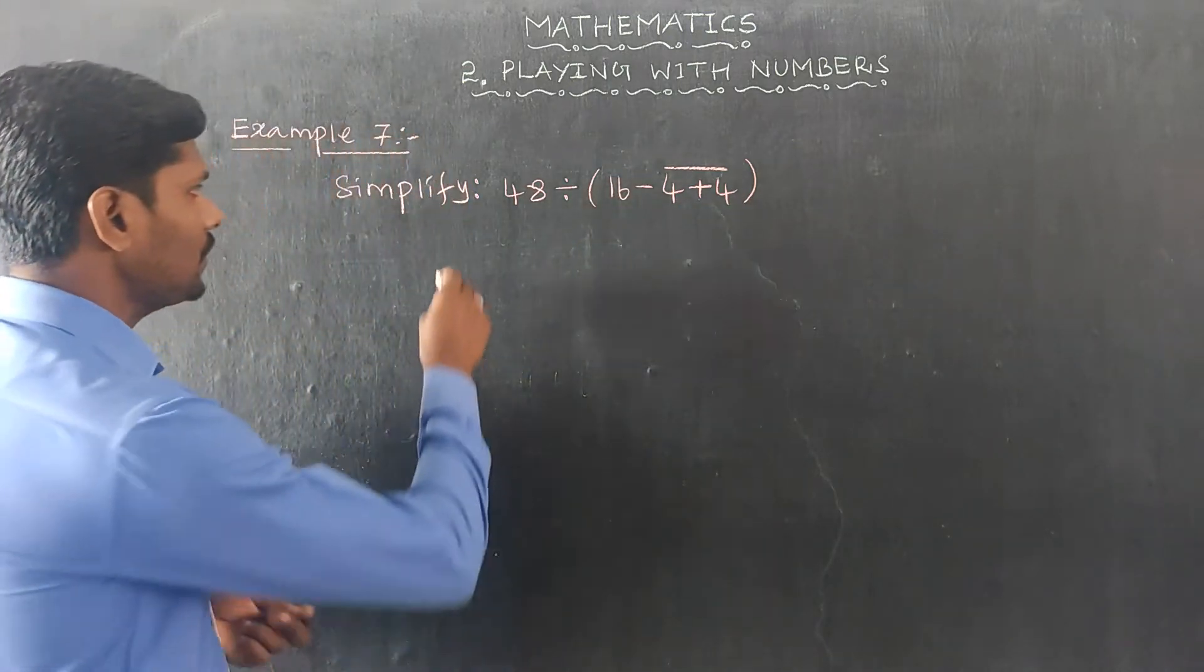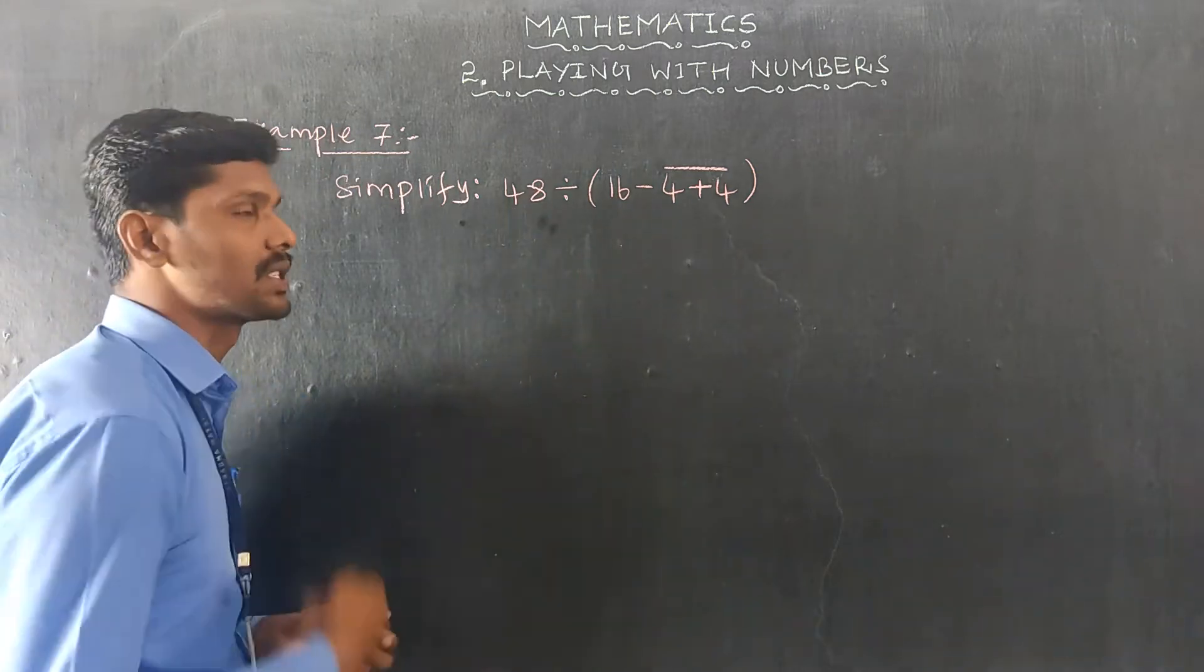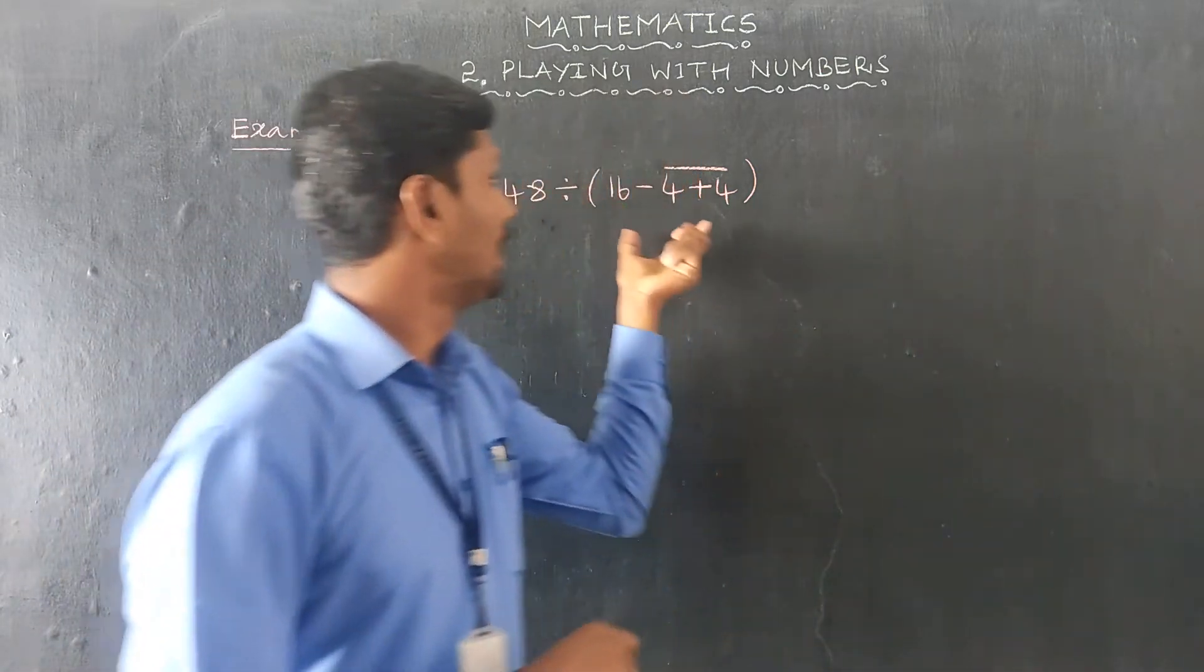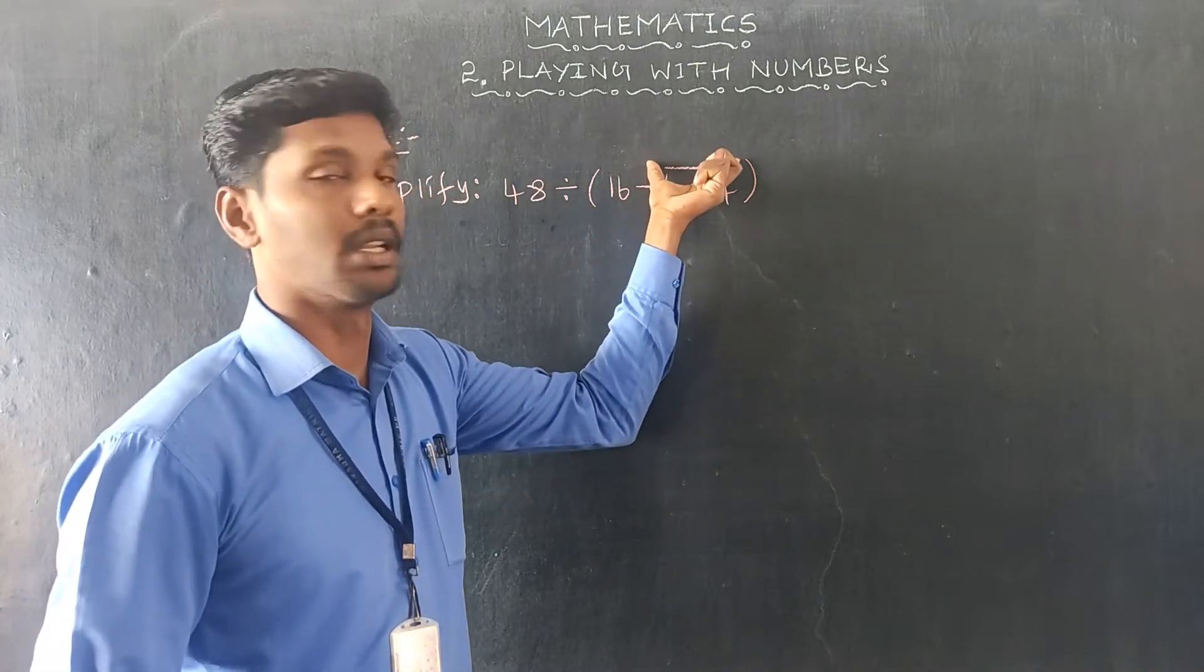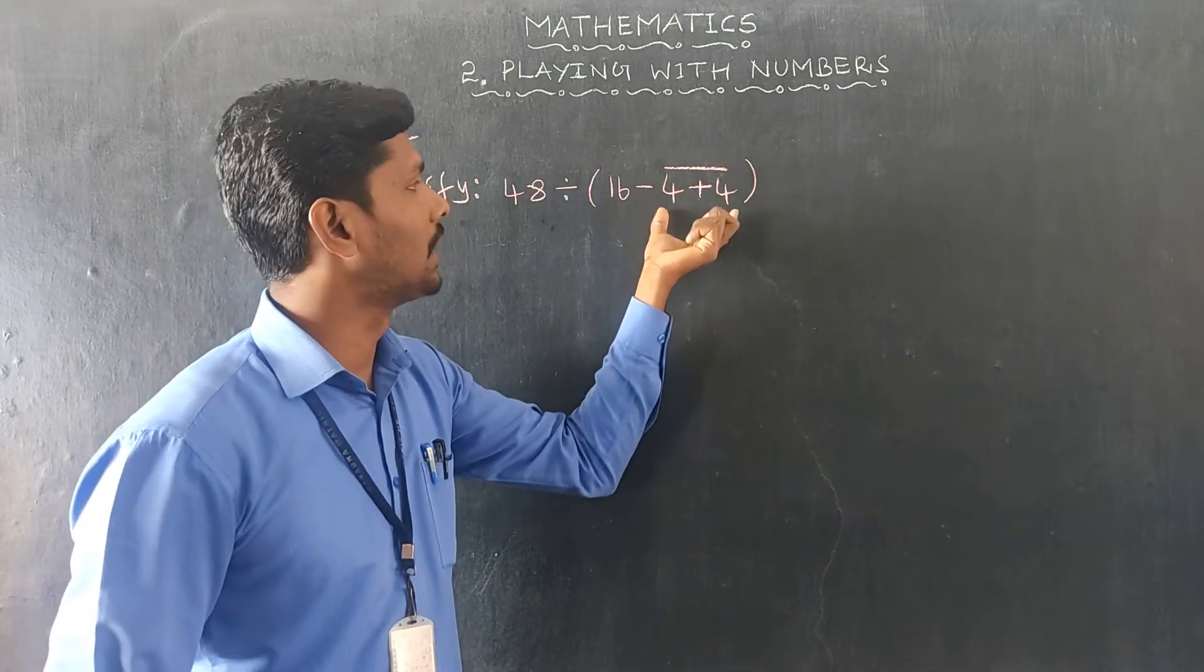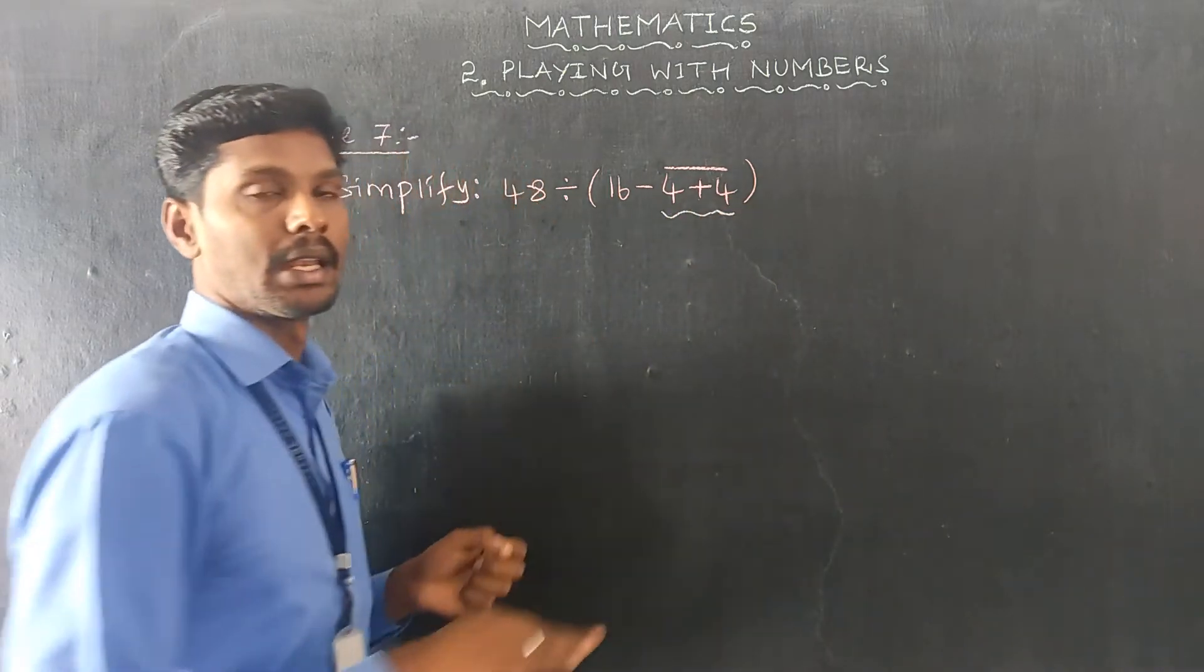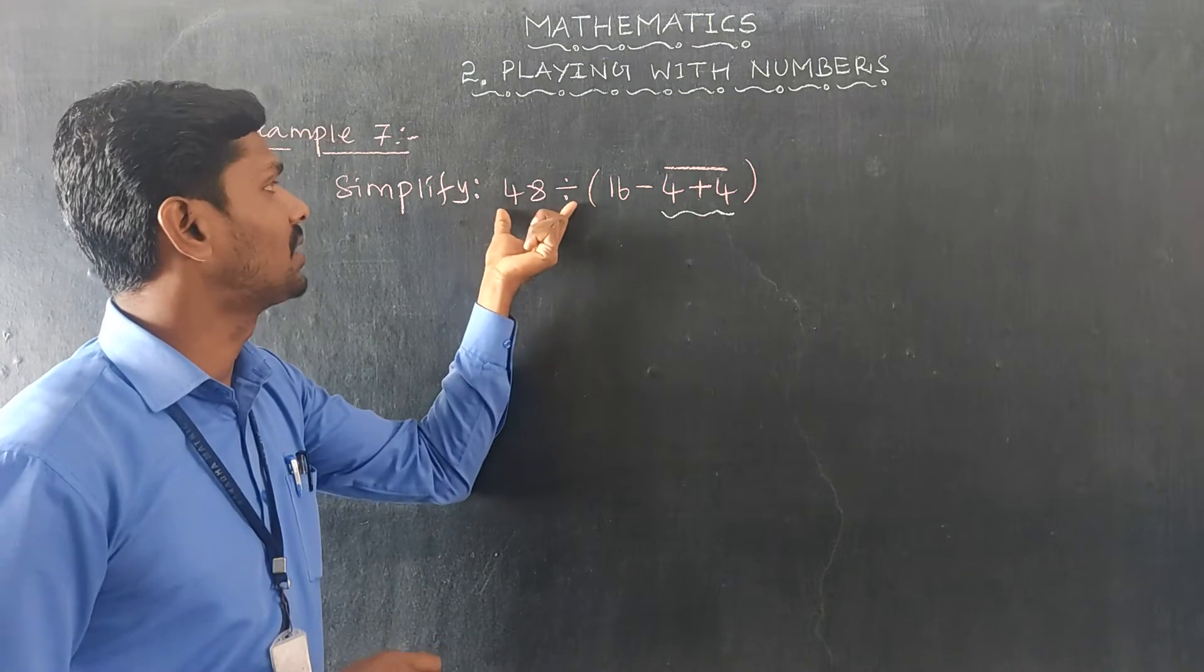Now that we can simplify it, we can first solve the innermost bracket. This is simple bracket and line bracket. So the innermost bracket is line bracket. Line bracket first, we can solve the innermost bracket and cancel the innermost bracket.